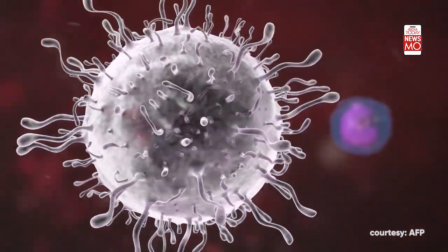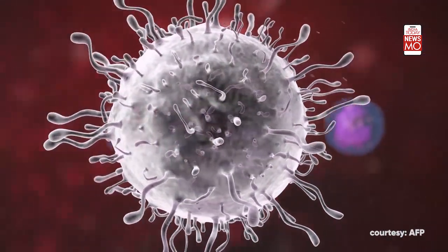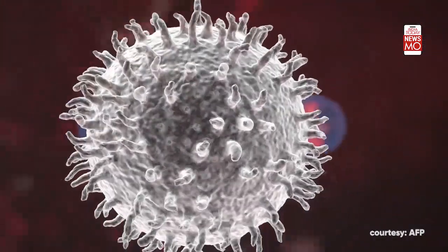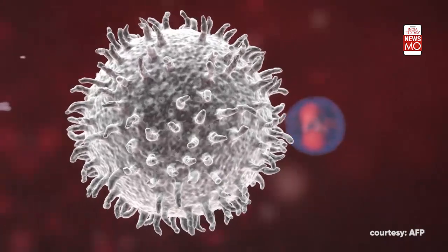Neutrophils flock to sites of acute inflammation. Lymphocytes: B cells create antibodies to tackle specific threats, while T cells destroy infected cells.